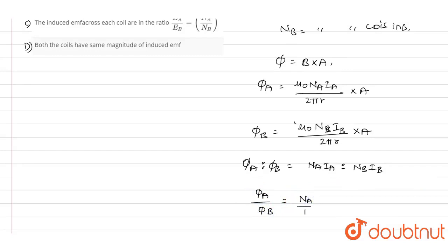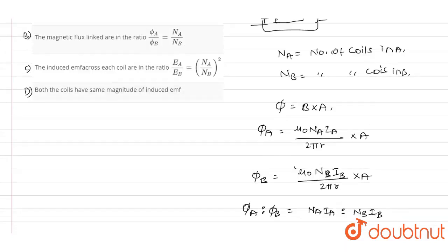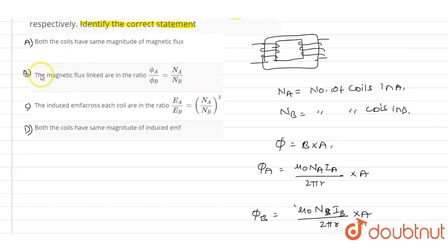Hence, out of these four options, if you observe option B, the magnetic flux linked are in the ratio Φ_A divided by Φ_B equals N_A divided by N_B. So this is what the answer we have got in the solution. According to that, option B is the correct answer for this question. Thank you.